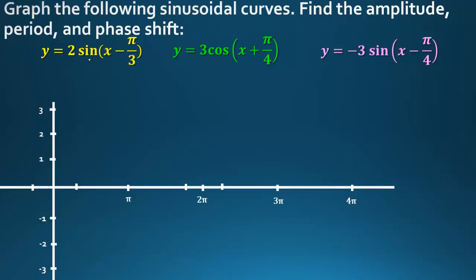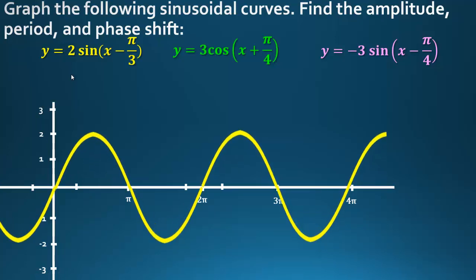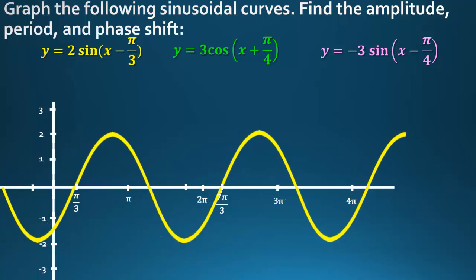For y = 2sin(x – π/3): the 2 stretches it vertically. The minus π/3 shifts the graph right by π/3. So instead of running from 0 to 2π, the period runs from π/3 to 7π/3. Amplitude is 2, period is 2π, and phase shift is positive π/3.